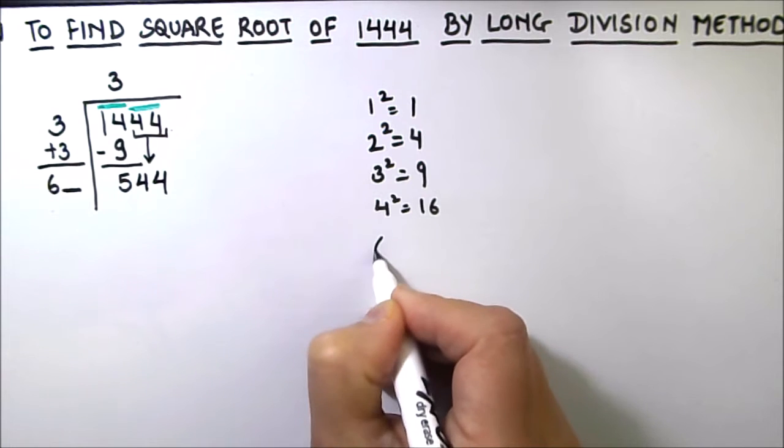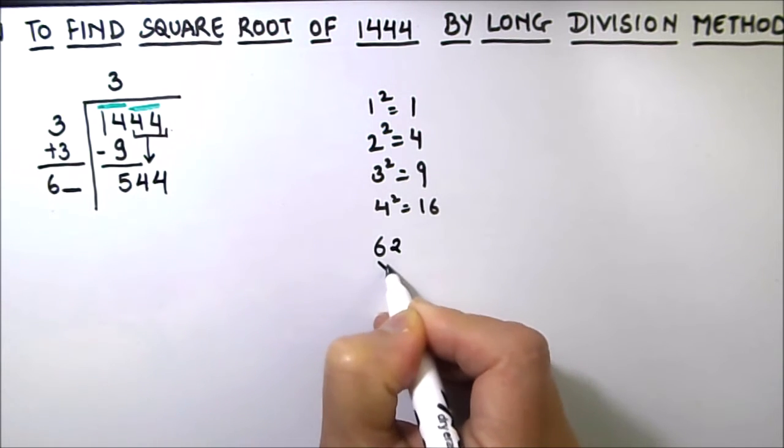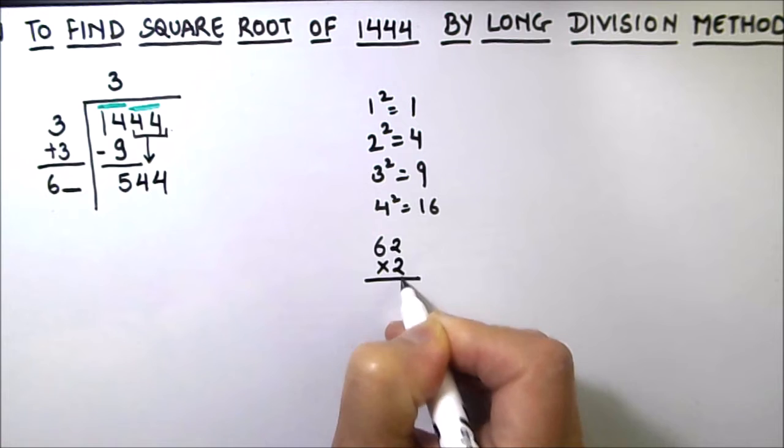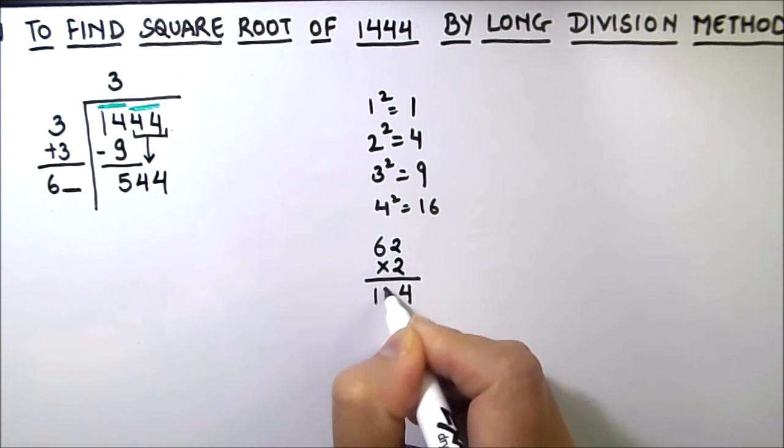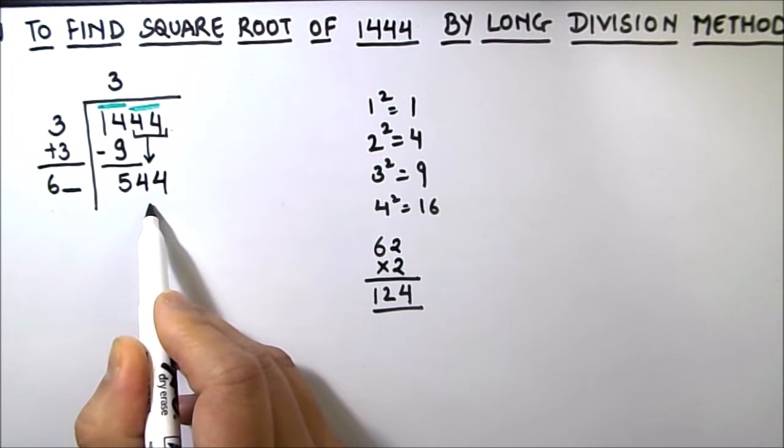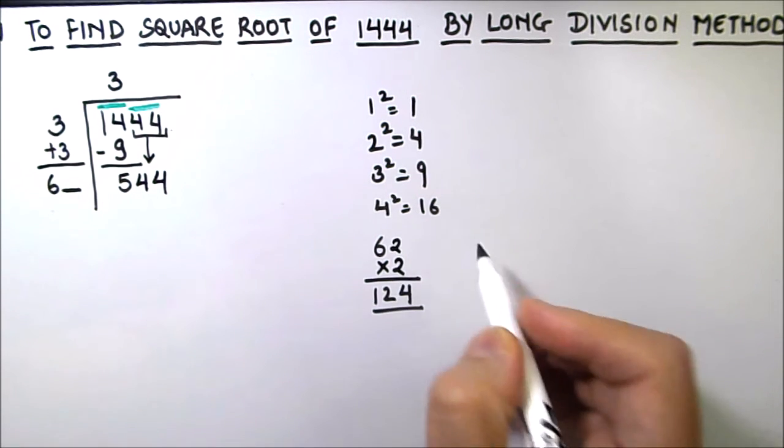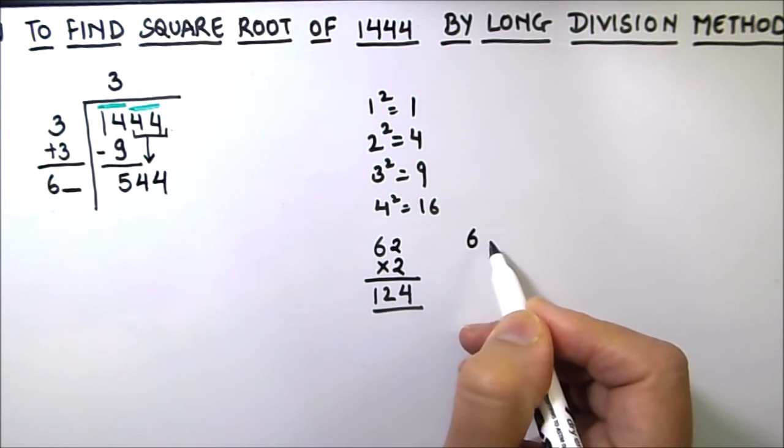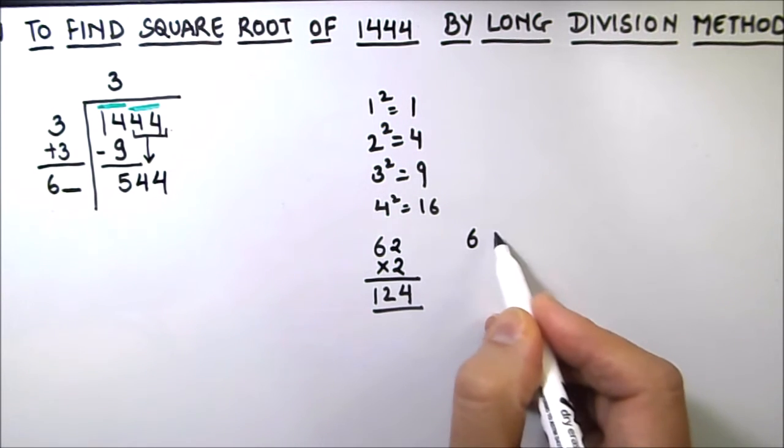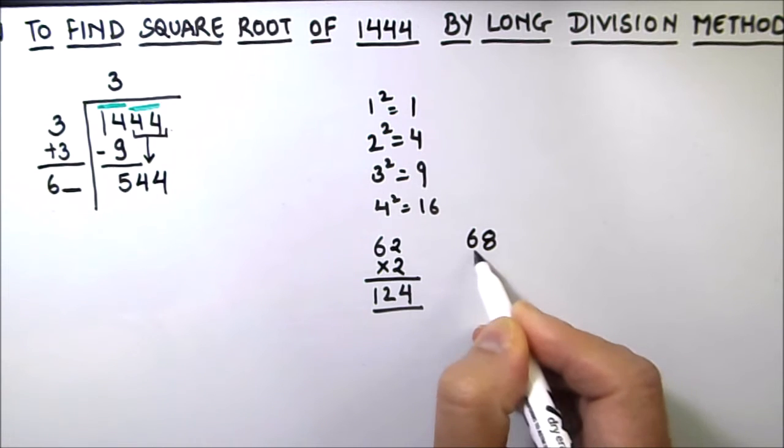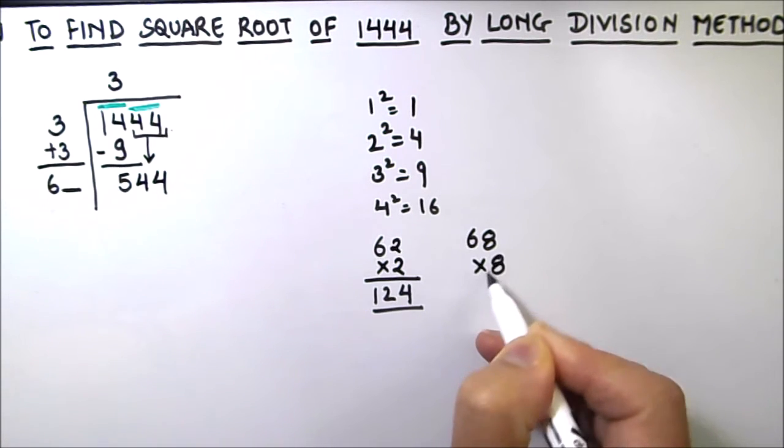So let's add number 2 here and multiply it by 2. So 62 times 2 will give us 2 times 2 is 4 and 2 times 6 is 12, which is 124, which is way less than 544. So let's try some other number. As we need to get 4 in our units digit, so let's try 8 here. 8 times 8 is 64.